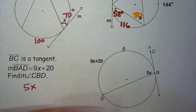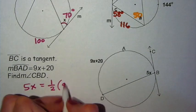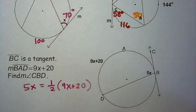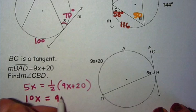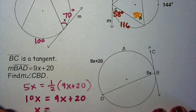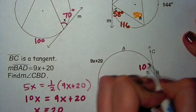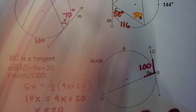The next example, we have an angle 5x that's going to be half of the arc, which is 9x plus 20. So your equation is 5x equals one-half times 9x plus 20. Then you want to multiply both sides by 2. So 10x equals 9x plus 20. Subtract 9x from both sides, and x equals 20. CBD is 5x plus 20, so it's 5 times 20. That's 100 degrees.